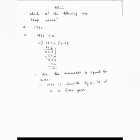4 times 9 is 36. Then do subtraction. 9 minus 6 is 3, and 3 minus 3 is 0. Then we drop the digit 2, and it becomes 32.